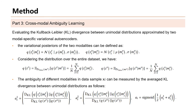Following the definition of cross-modal ambiguity, we propose an ambiguity learning method. We evaluate the KL divergence between unimodal distributions, which are approximated by two modality-specific variational autoencoders. The learned ambiguity score is then used to control the contribution of cross-modal features versus unimodal features. Therefore, when unimodal features present strong ambiguity, the classifier should pay more attention to cross-modal features, and vice versa.